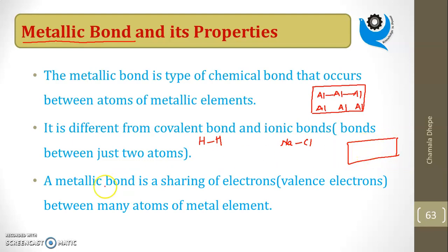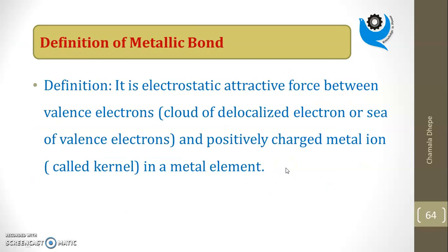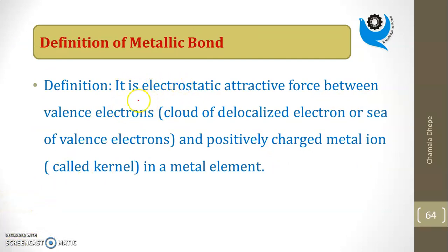Metallic bond is a sharing of valence electrons between many atoms of the element. The definition of metallic bond: it is an electrostatic attractive force between the cloud of delocalized valence electrons — the sea of valence electrons — and the positively charged metal ion, which is called the kernel, in the metal element.